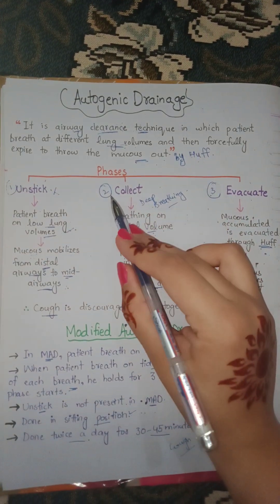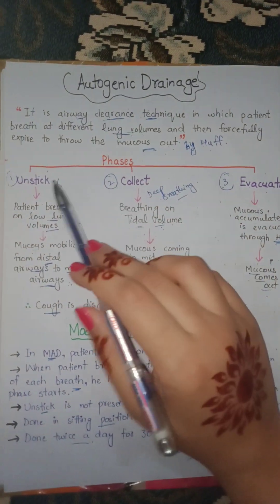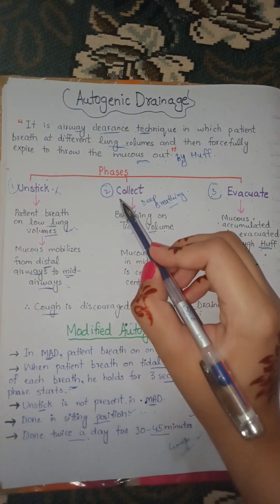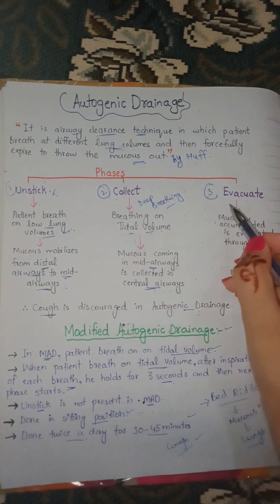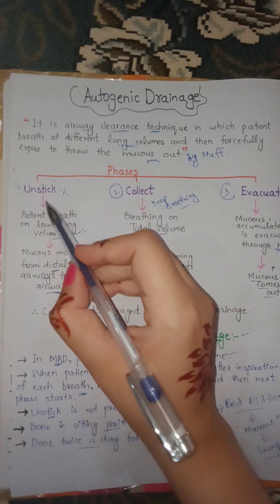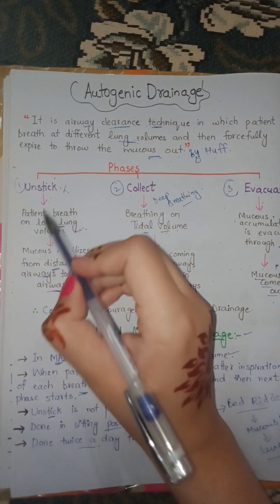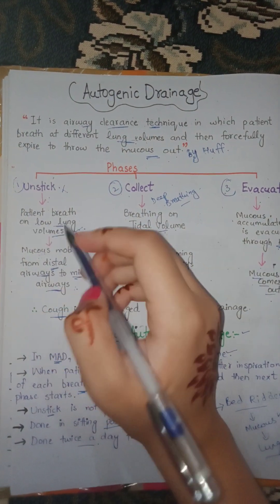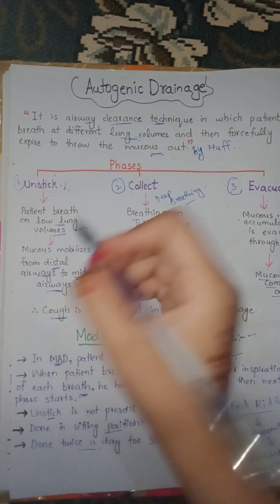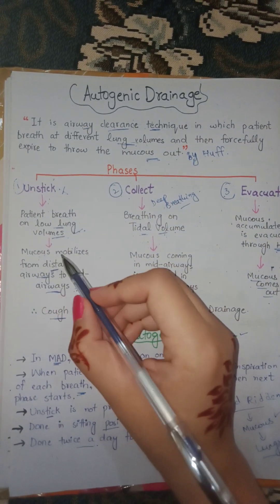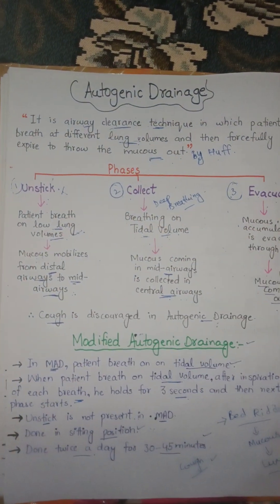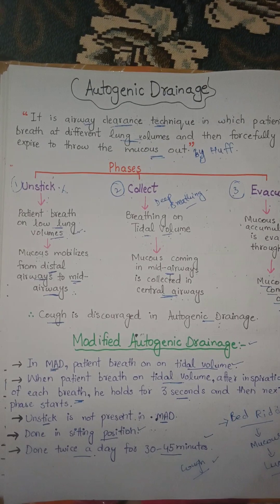There are three phases of autogenic drainage: number one is the unstick phase, number two is the collect phase, and number three is the evacuate phase. In the unstick phase, the patient breathes at low lung volumes and mucus mobilizes from the distal airways to the mid airways.